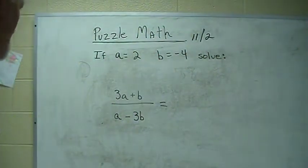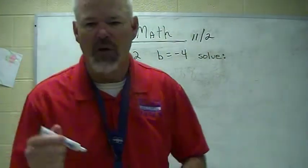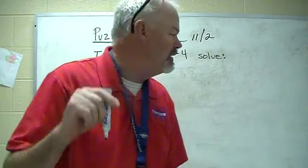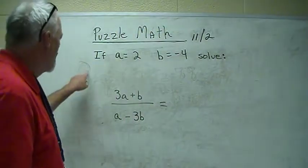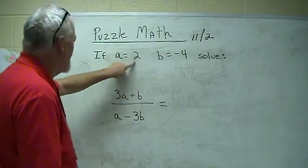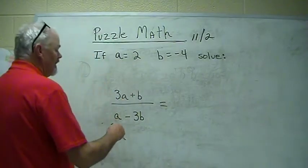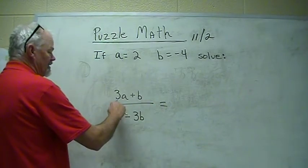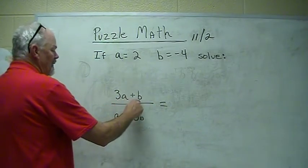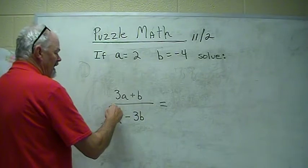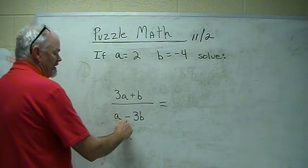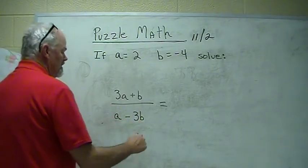Alright, here we go. Gonna try it. If you don't have it done, pause it. Get it done. But, here we go. So, all we're gonna do is puzzle math. Put the pieces in the puzzle. Wherever we have an A, we're gonna put a 2. If I would read this like I'm reading a sentence in a book, it's 3 times A plus B divided by A minus 3 times B. So, that's what we're gonna do.